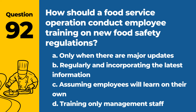Question 92. How should a food service operation conduct employee training on new food safety regulations? a. Only when there are major updates. b. Regularly and incorporating the latest information. c. Assuming employees will learn on their own. d. Training only management staff. Answer: b. Regularly and incorporating the latest information. Continuous training ensures staff are up to date with food safety practices.